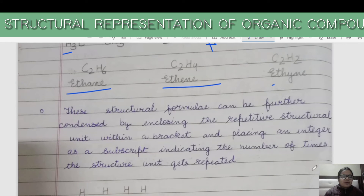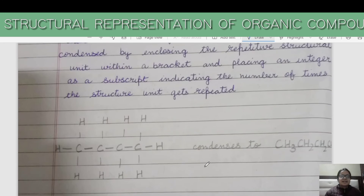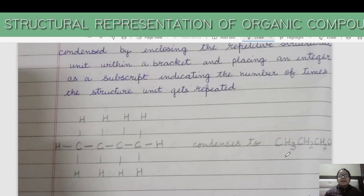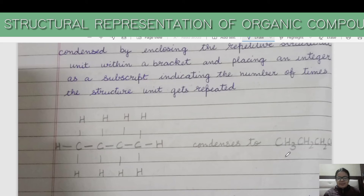A repeating unit can be condensed by enclosing it in a bracket and placing an integer as a subscript indicating the number of times the structural unit is repeated. For example, if CH2 is repeating, we write CH2 in a bracket with a subscript of 2 or 3 as appropriate.